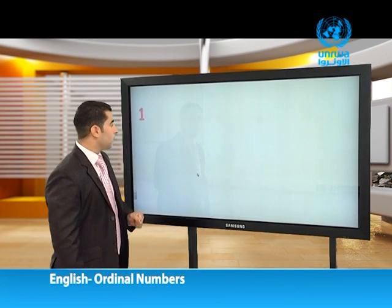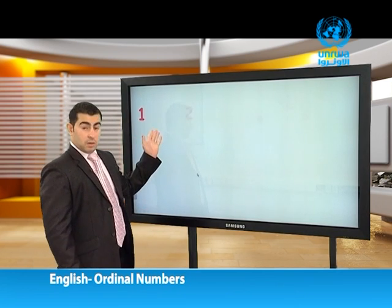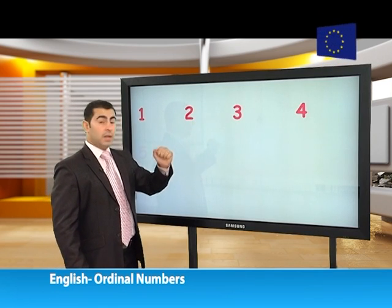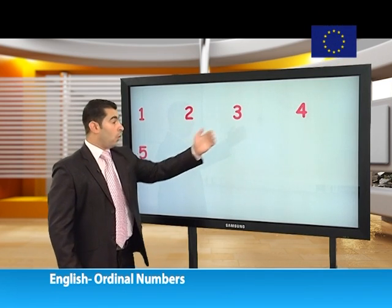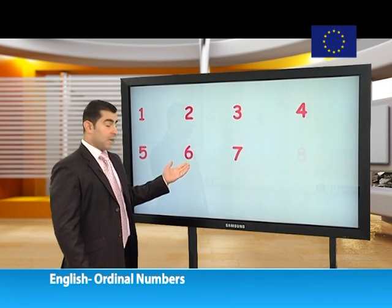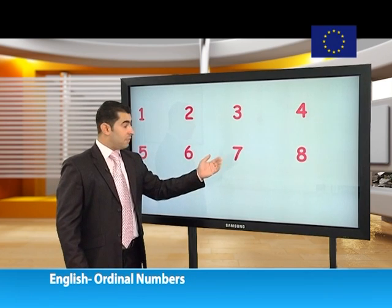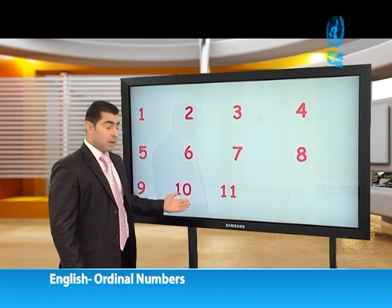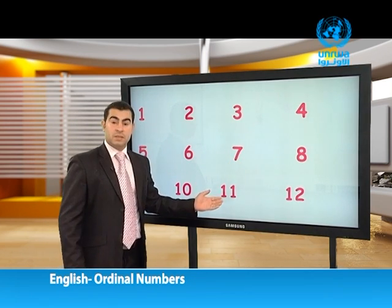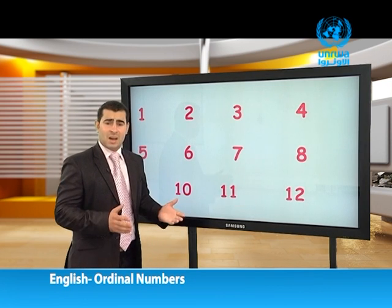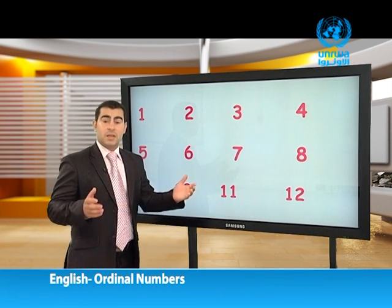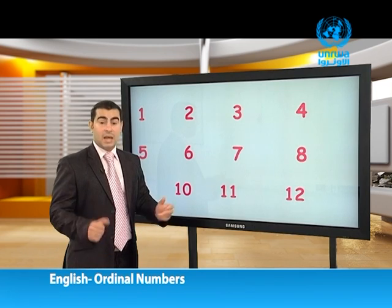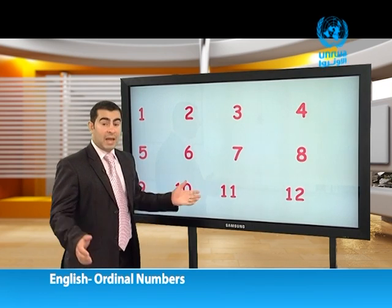Look. One, two, three, four, five, six, seven, eight, nine, ten, eleven, twelve. These are the regular numbers — the cardinal numbers.